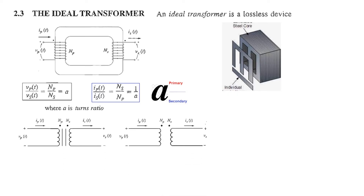Diagrammatically, the transformer is represented by either of two symbols — no difference. The middle line shows that the core material is iron or steel; this is the iron core transformer. If there is no middle line, most likely it is an air core or any other material such as plastic.